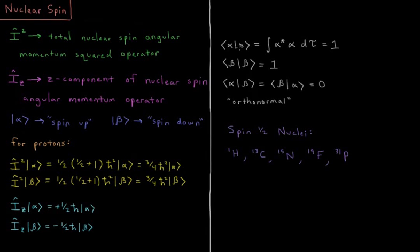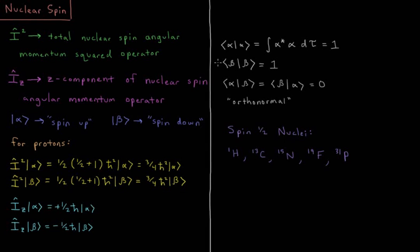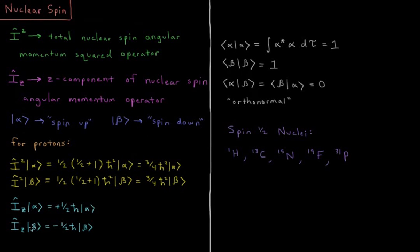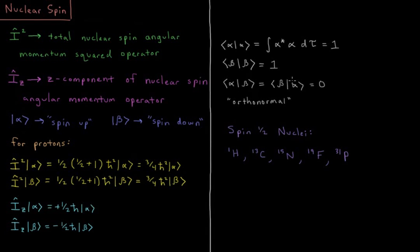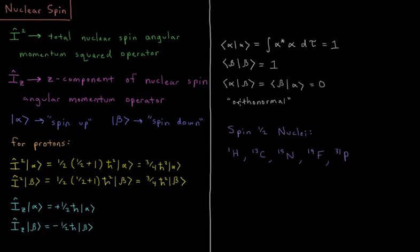So the properties of these work much the same as the spin properties did for electrons. These functions are both normalized and orthogonal, these spin functions alpha and beta. So the integral of alpha star alpha over the spin coordinate is equal to one. Integral of beta star beta is one. And any mixed integral between them, alpha star beta or beta star alpha, is equal to zero because they're both orthogonal and normalized, meaning they're orthonormal.